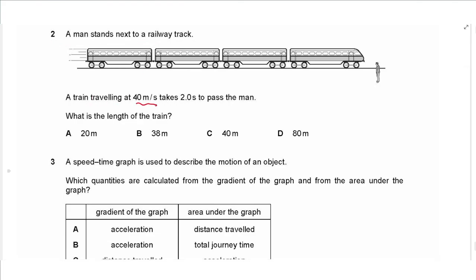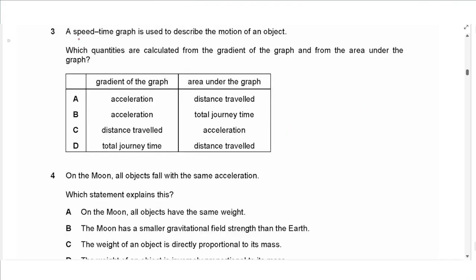Question 2: a man stands next to a railway track. A train traveling at 40 meters per second takes 2 seconds to pass the man. We have speed and time and need the length of the train, which is distance. Using distance equals speed multiplied by time: 40 times 2 gives 80 meters.